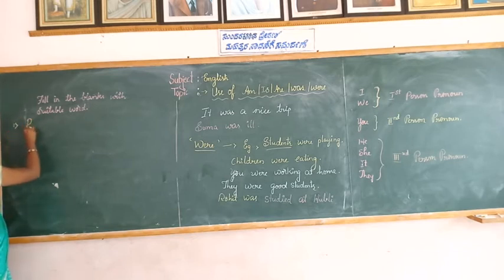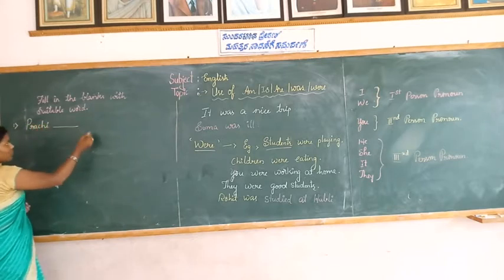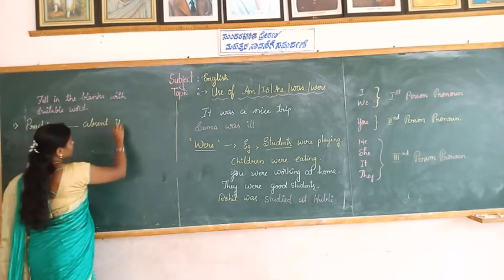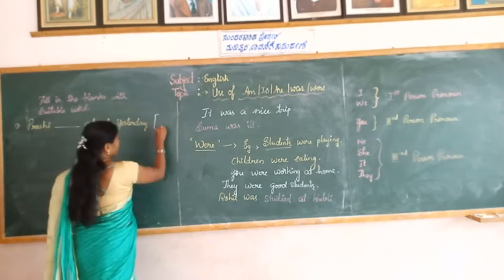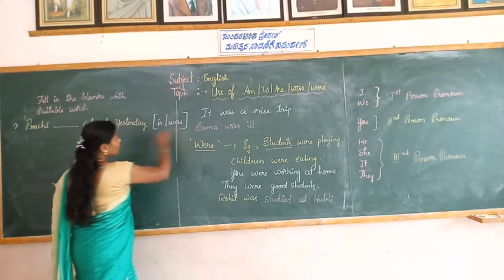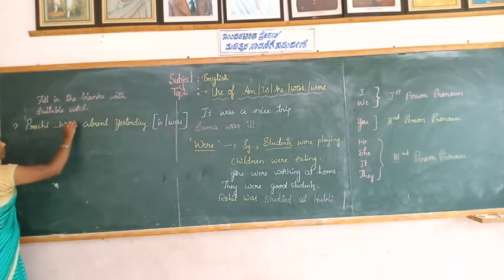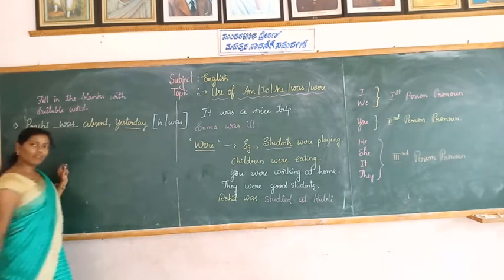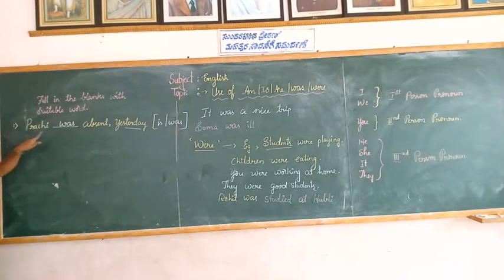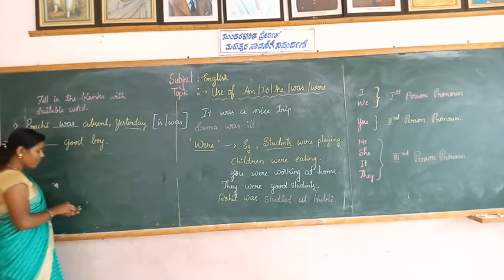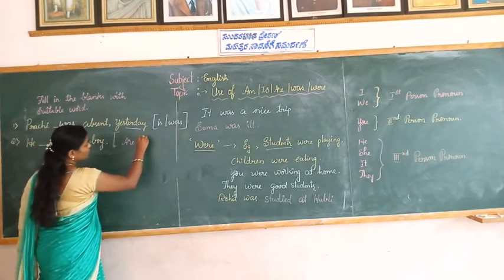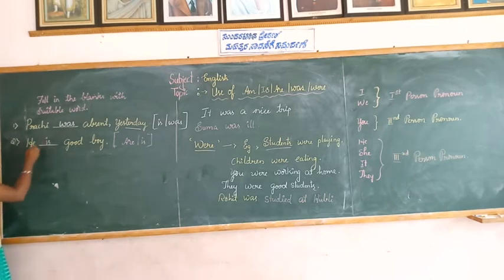First example: Prachi ___ absent yesterday. The answer is 'was', because 'yesterday' refers to past tense and 'Prachi' is a singular subject, so we use 'was'. Second example: He ___ a good boy. Here we use 'is' because 'he' is a singular subject — he is a good boy.